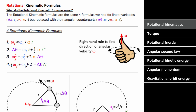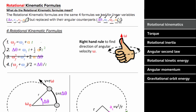The rotational kinematic formulas allow us to relate five different rotational motion variables. They look just like the regular kinematic formulas except instead of displacement there's angular displacement, instead of initial velocity there's initial angular velocity, instead of final velocity there's final angular velocity, and instead of acceleration there's angular acceleration. The time is still just the time. You only get the first two of these on the AP exam formula sheet — you do not get three and four. Just like the regular kinematic formulas, these rotational kinematic formulas are only true if the angular acceleration is constant.